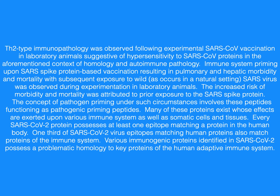Th2 type immunopathology was observed following experimental SARS-CoV vaccination in laboratory animals, suggestive of hypersensitivity to SARS-CoV proteins in the context of homology and autoimmune pathology. Immune system priming upon SARS spike protein-based vaccination resulting in pulmonary and hepatic morbidity and mortality with subsequent exposure to wild SARS virus was observed in laboratory animals. The increased risk of morbidity and mortality was attributed to prior exposure to the SARS spike protein. The concept of pathogen priming under such circumstances involves these peptides functioning as pathogenic priming peptides. Many of these proteins exist whose effects are exerted upon various immune system as well as somatic cells and tissues.